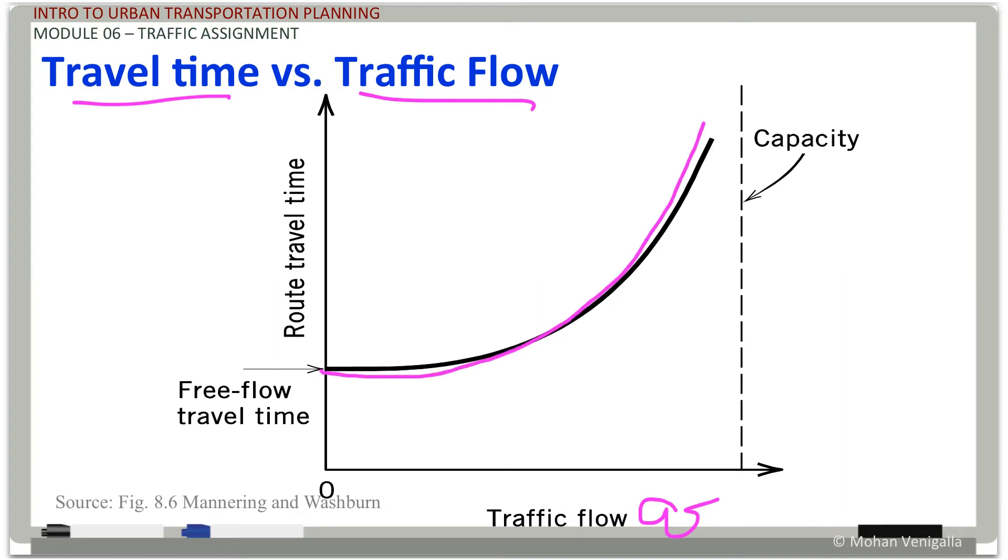And somewhere here is your capacity, which is q capacity. Sort of like here is free flow speed. This is more or less a very realistic speed versus flow relationship. And a corresponding travel time versus flow relationship will look something like this. It's a power of traffic volume capacity ratio.